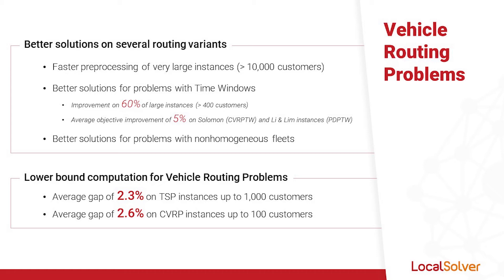Results on the capacitated vehicle routing problem with time windows have been improved by 60% on average on large instances with more than 400 customers. As for pickup and delivery variants, our results on the literature's benchmarks have been improved by 5% on average. We also find better solutions when the vehicle fleet is non-homogeneous. In addition, Local Solver can now provide better lower bounds on vehicle routing problems, thanks to refined column and row generation techniques.